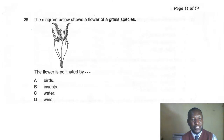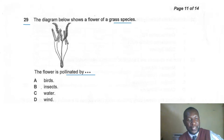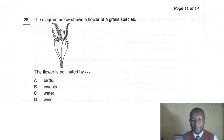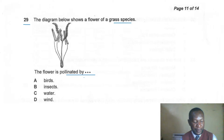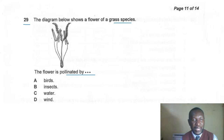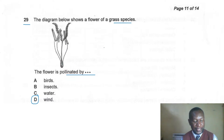Question twenty-nine: the diagram shows a flower of a grass species. What agent pollinates this flower? Looking at the stigma, it is feathery. A feathery stigma is found in wind-pollinated flowers. Wind-pollinated flowers also have large anthers and long pendulous filaments. The correct answer is D — wind.